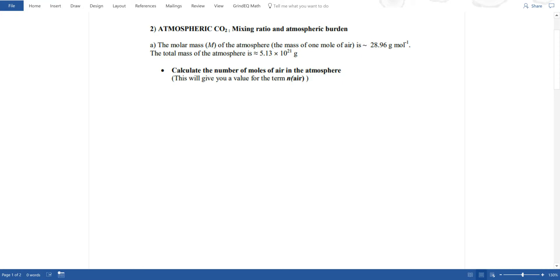First of all, this is a question about atmospheric carbon dioxide. The molar mass m of the atmosphere, i.e. the mass of one mole of air, is about 28.96 grams per mole. The total mass of the atmosphere is about 5.13 times 10 to the power of 21 grams. Calculate the number of moles of air in the atmosphere. This will give you a value for the term n air, which is a term that I will need later on.